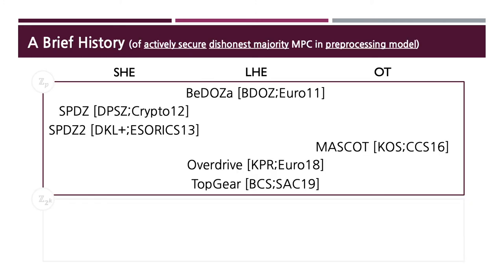After SPDZ, there were active and steady developments in this area. Except Medoza, all these works share the same online phase. The distinctive features are in the designs of the pre-processing phase. These works can be classified by the main technical tools they use, namely somewhat homomorphic encryption, linear homomorphic encryption, and oblivious transfer. There were some back and forth, but Overdrive with TopGear optimization on top is now considered to be the state-of-the-art, which leveraged high parallelism of lattice-based homomorphic encryption.